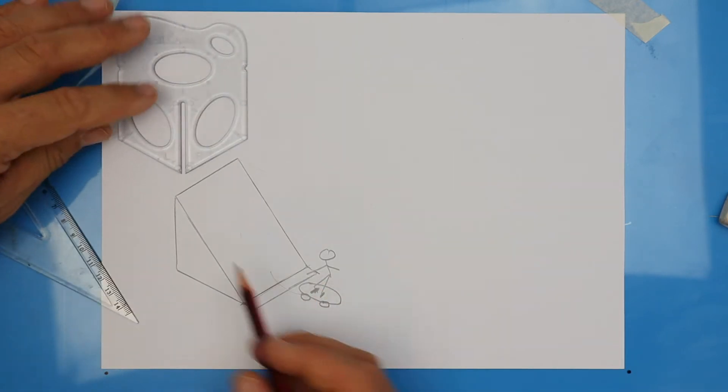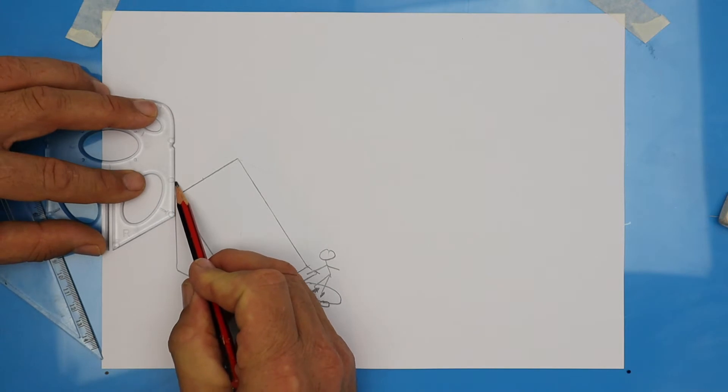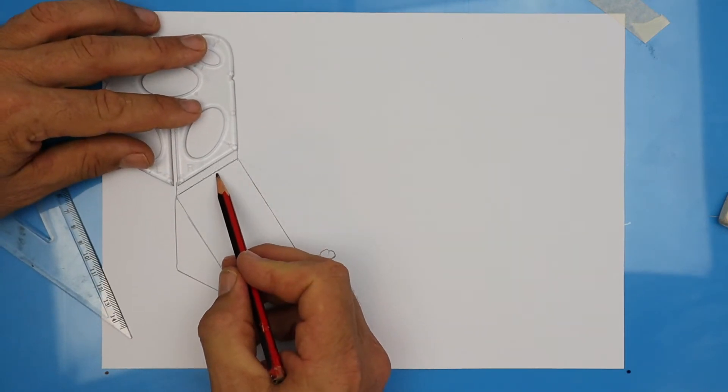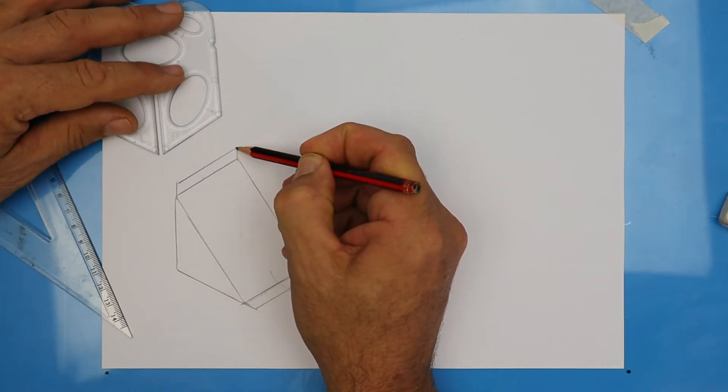Now we're going to do exactly the same thing at the top. We're going to extend the lines, make them the same amount, and then copy that line straight up and draw it in.